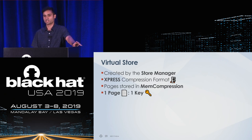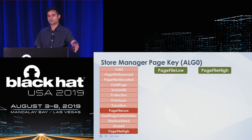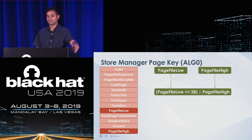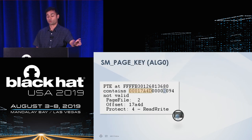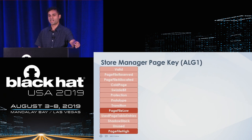How do we derive a store manager page key? When we walk through the page tables and arrive at a software PTE, we look at page file low and page file high. We run a small math operation — effectively smushing these values together into our store manager page key. For example, with page file high of hex 17A4D and page file low of 2, we get a 32-bit value of 20017A4D. This is all undocumented and subject to change. As of Windows 1803, the algorithm changed slightly.